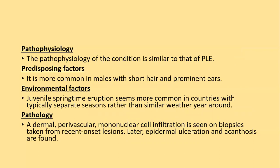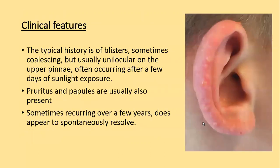Pathology: a dermal perivascular mononuclear infiltrate is seen in biopsies; later epidermal ulceration and acanthosis are also seen. Typical history is that of blisters, sometimes coalescent but usually unilocular on the upper pinna, often occurring after a few days of sunlight exposure. Pruritus and papules are also seen, and the condition, sometimes recurring over a few years, appears to resolve spontaneously.